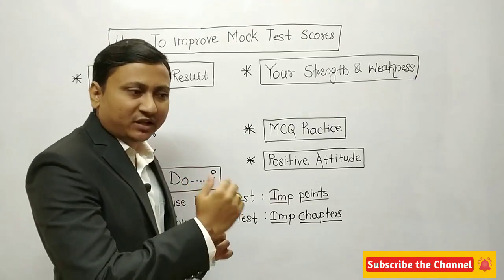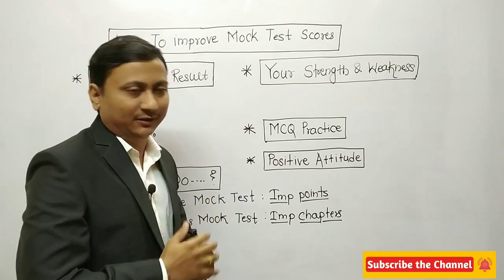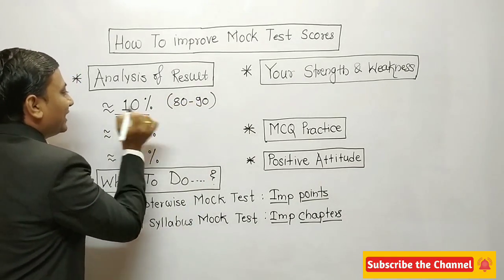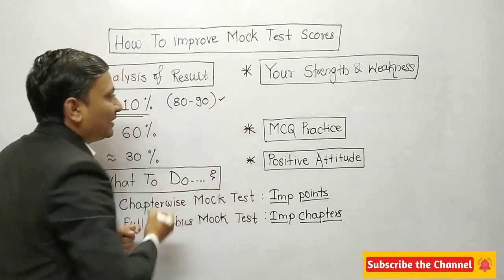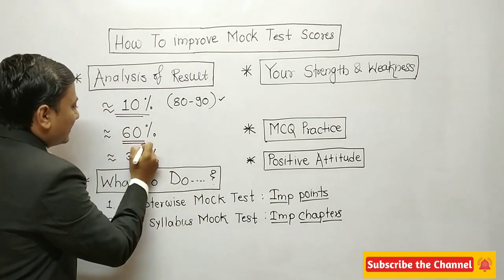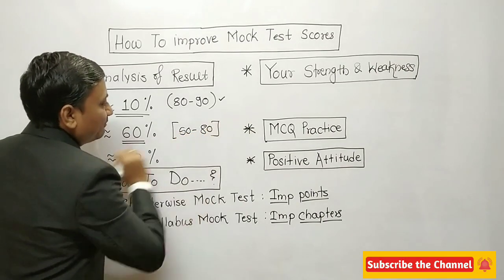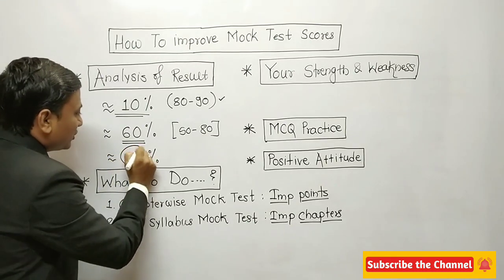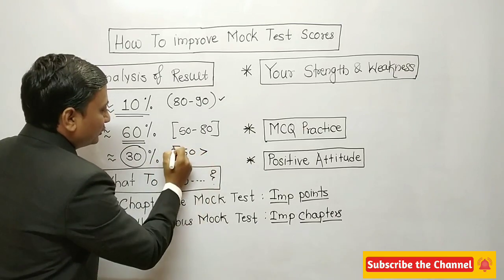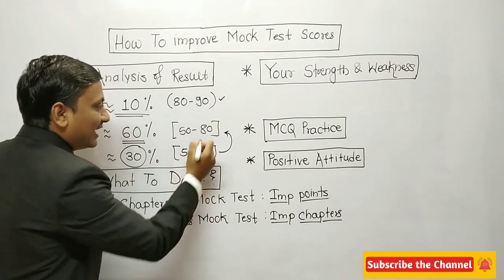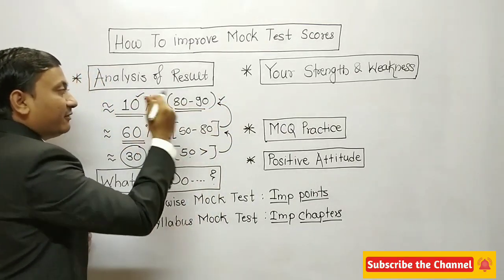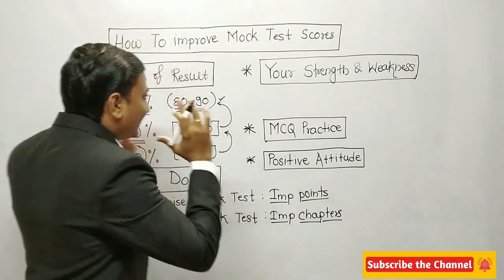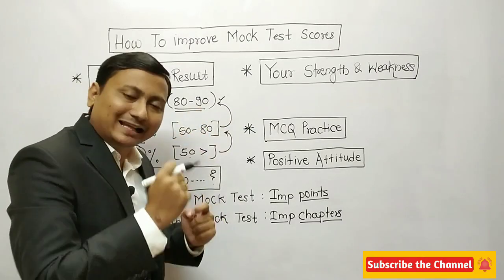Apan samzun gheu ki mock test madhe jay vidyarthi topper asatat, waa middle category madhe astat, ki waa jayansha score khupach kami asato. Analysis karaychi tar, kutlya hi mock test madhe jay vidyartyanche score 80 ki waa 90 percentile cha above asato, tya vidyartyanche percentage hi fakta 10% asate. Maximum vidyarthi 50 to 80 percentile madhe astat, ani 30 percent student below 50 percentile madhe astat.